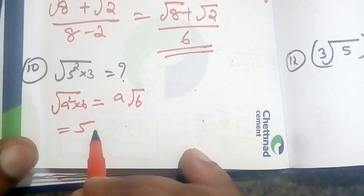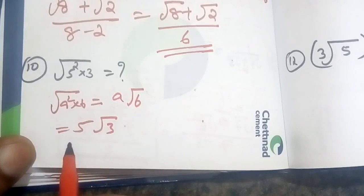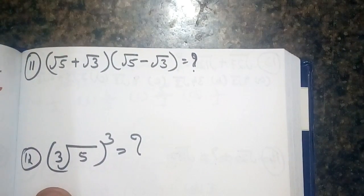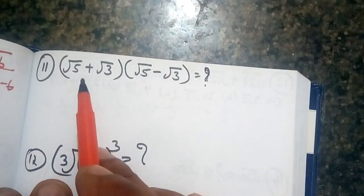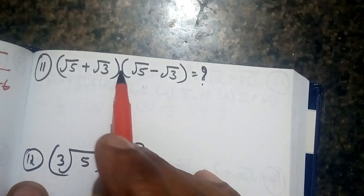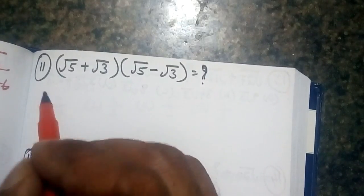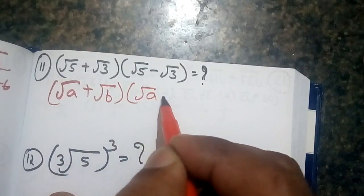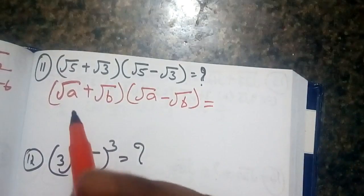Let's take a look at root 5 square into root a. So, root 5 plus root 3 into root 5 minus root 3 — this follows the identity a plus b into a minus b. Now, root a plus root b into root a minus root b.